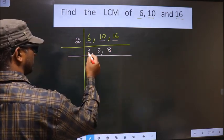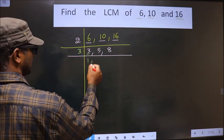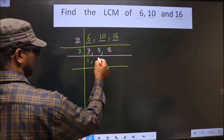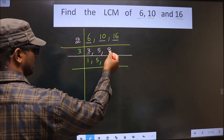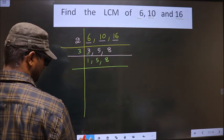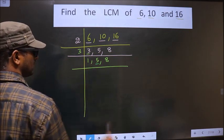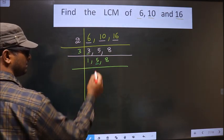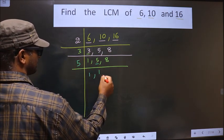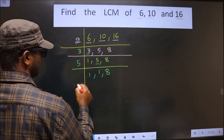Now here the first number is 3. 3 is a prime number, so 3 wants 3. 5 is not divisible by 3, so you write down 5 as it is. 8 is also not divisible by 3, so you write down 8 as it is. Now here we got 1, so focus on to the next number, that is 5. 5 is a prime number, so 5 wants 5. 8 is not divisible by 5, so you write down 8 as it is.